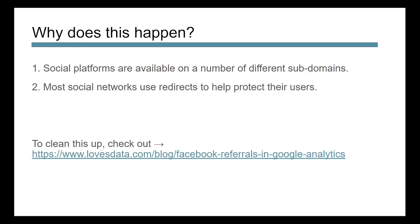So why does this happen? One of the main reasons is that social platforms are available on a number of different subdomains and devices across different networks. So you can do Facebook in the app, in your browser, on mobile, a tablet, or a computer, or even other connected devices. This can cause issues in tracking because Google will look for and pick up that information if it sees it coming from an outside site. And if the UTM hasn't been built with social tracking in it, it's going to go into referral. The other reason is that social networks use redirects to help protect user ID and identity, which causes further issues when it comes to tracking social.